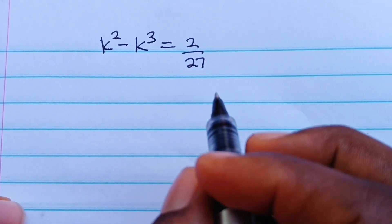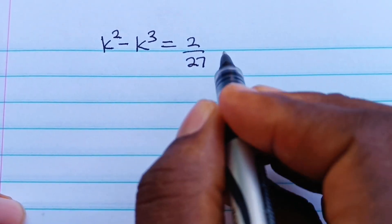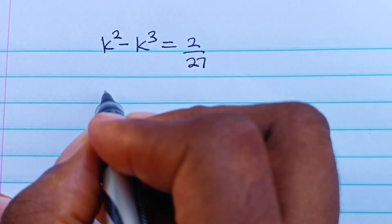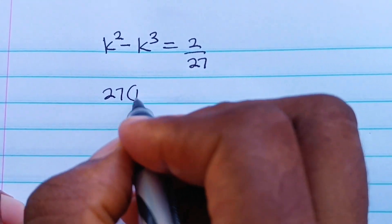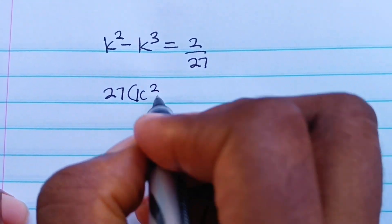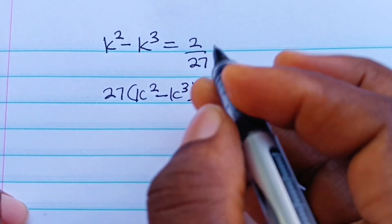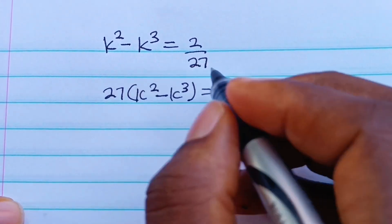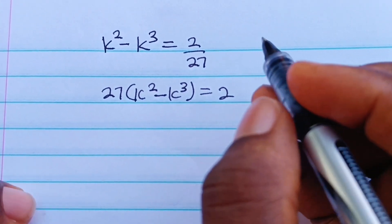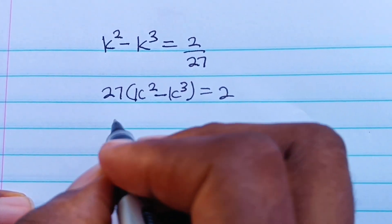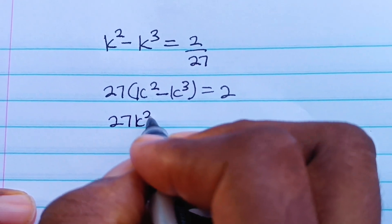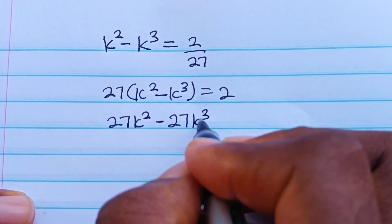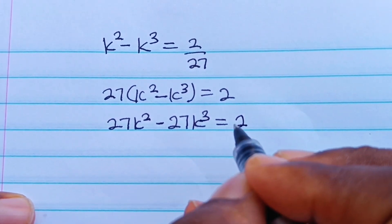Let's find the value of k. Let's cross multiply. So 27 will multiply — it's 7 brackets. k to the power of 2 minus k to the power of 3 is equal to 2. So we are multiplying both sides by 27, giving us 27k² minus 27k³ is equal to 2.